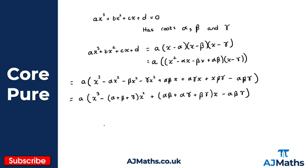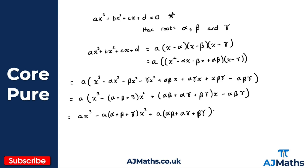What I'm going to do now is multiply through by a. So I get ax cubed, minus a lots of alpha plus beta plus gamma x squared, plus a lots of alpha beta plus alpha gamma plus beta gamma times x, and finally minus a alpha beta gamma.